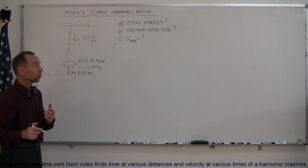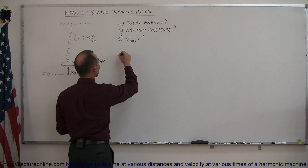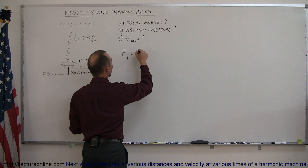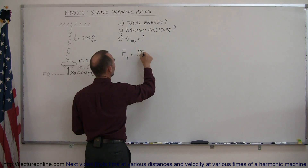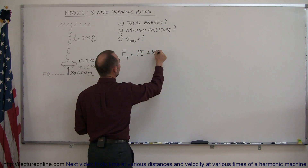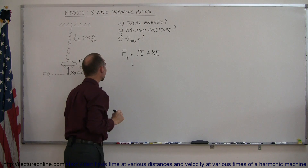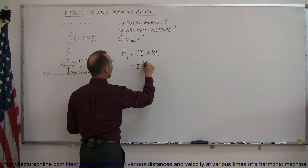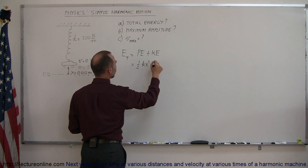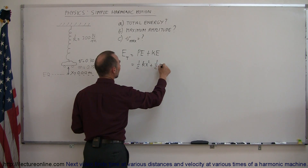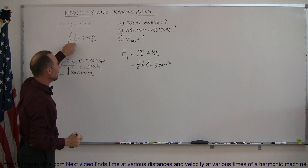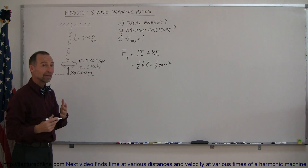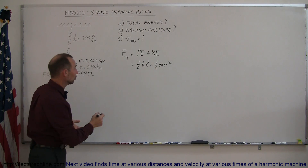Starting with the question of what is the total energy, we can say that the total energy is equal to the potential energy plus the kinetic energy. Potential energy is defined as one-half kx squared, and kinetic energy is defined as one-half mv squared. We have k, x, m, and v, so we have everything we need to find the total energy.